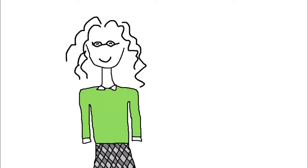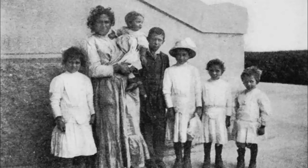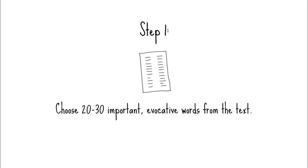Here's how it works. Suppose you're a social studies teacher doing a unit on immigration. You want students to read a selection from Peter Cohen's book Ellis Island Interviews, a piece where a woman tells the story of her family's move to the U.S. from Italy. Your first step is to choose 20 to 30 important evocative words from the text — words that will evoke strong feelings or images in the students' minds. Here are the words you choose from this passage.